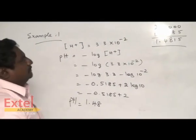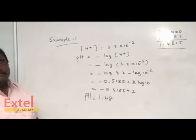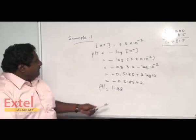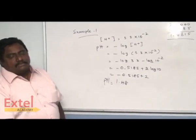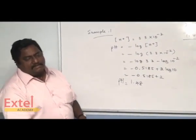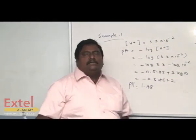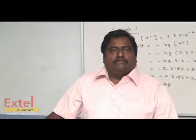So the pH is equal to 1.48. The pH is less than 7. Since pH is less than 7, it is acidic. That is all about the first problem.